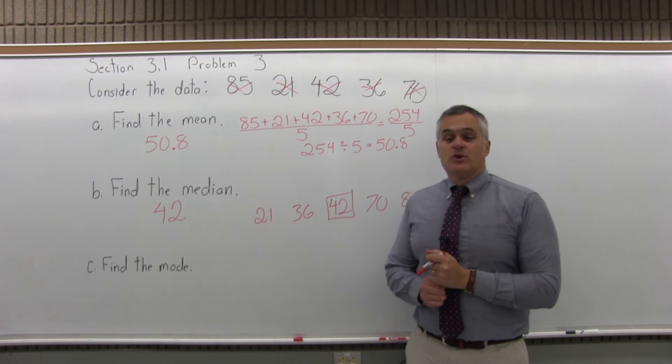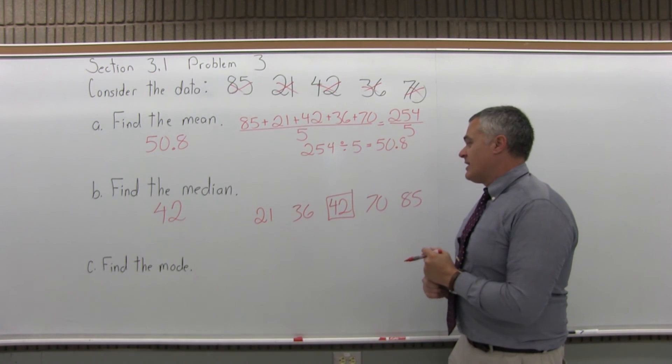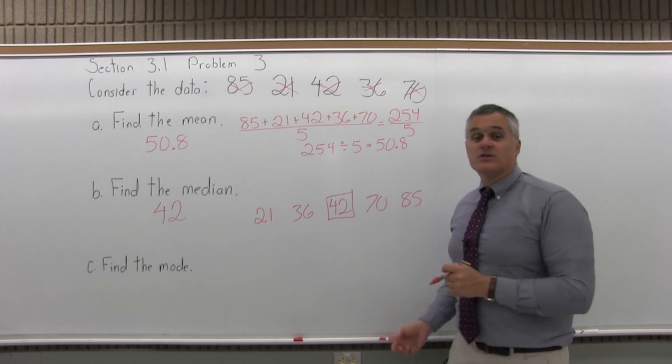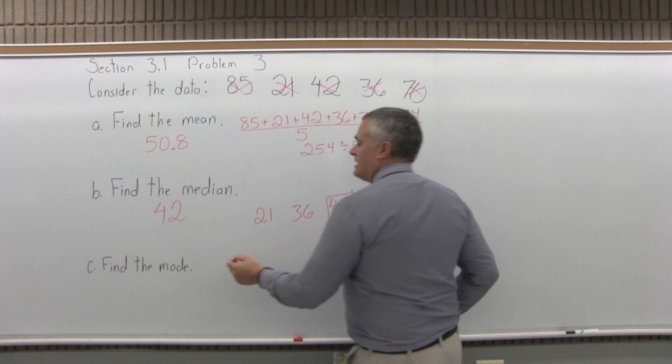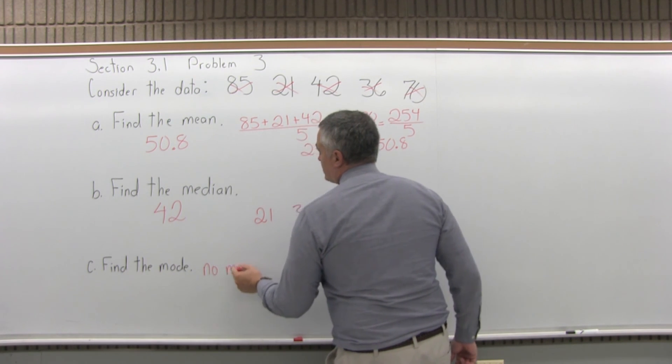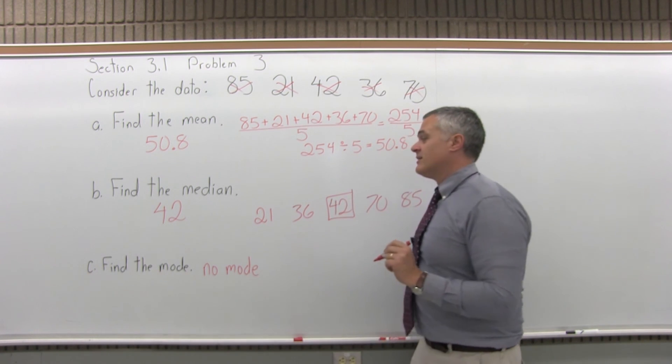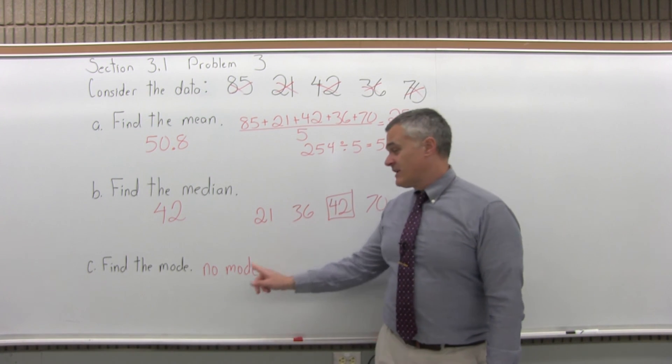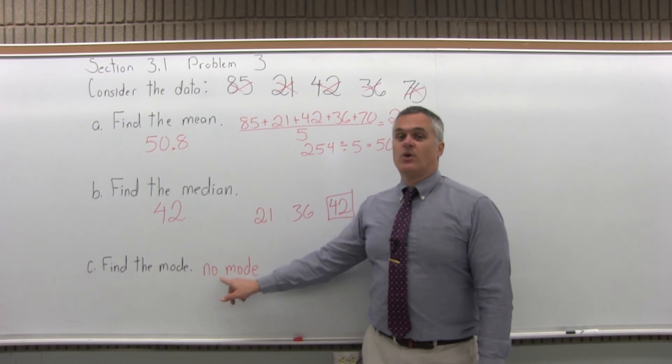And now, find the mode, the most common or the most repeated value. Well, nothing's repeated. So the answer for find the mode is no mode. You can't put 0. That's different. That means 0 shows up more often than any other data value, which is not the case here. You have to actually write the words no mode.